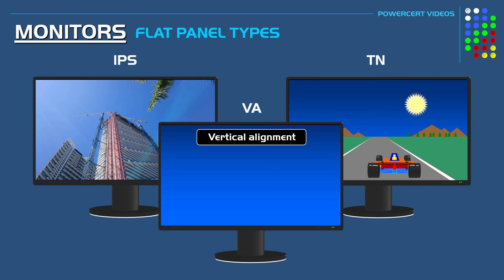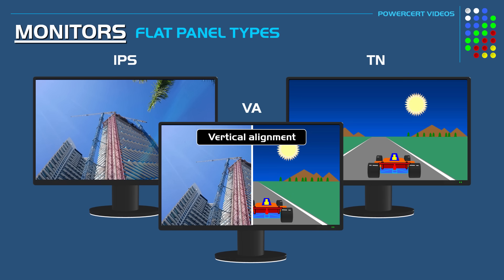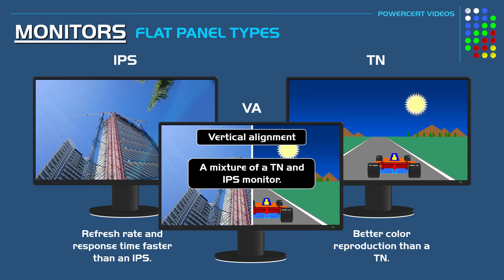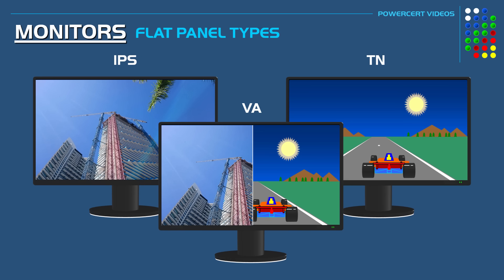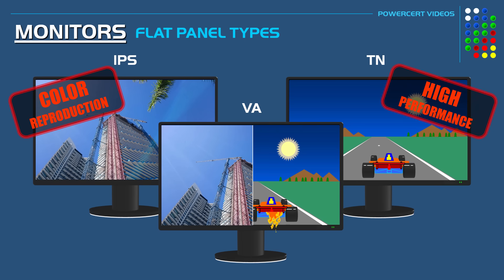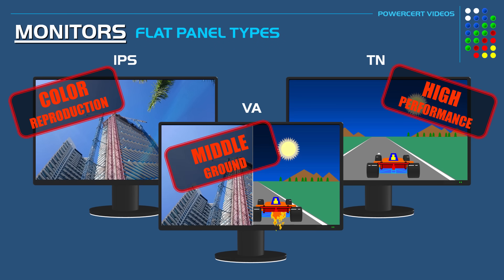A VA, or vertical alignment monitor, is sort of in the middle. VA monitors have a refresh rate and response time faster than an IPS monitor but slower than a TN, and better color reproduction than a TN but not as good as an IPS. So a VA monitor is basically a mixture of TN and IPS. Which flat panel type is best depends on your specific needs: for graphics and photography go with IPS for best color accuracy; for gaming go with TN for highest refresh rates and lowest response time; or for something in between, consider a VA monitor.